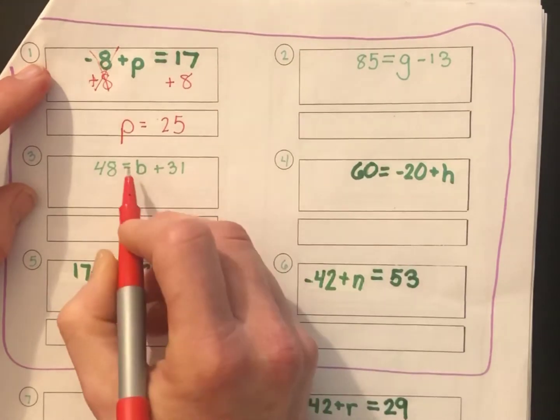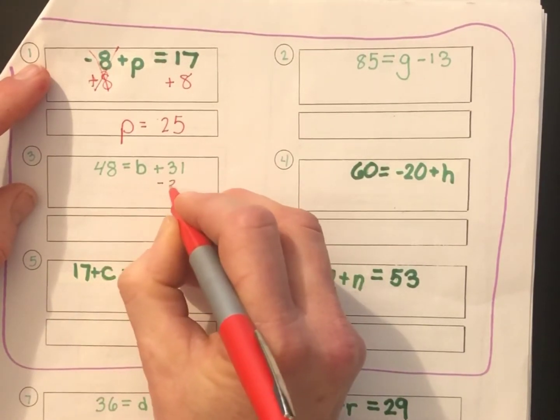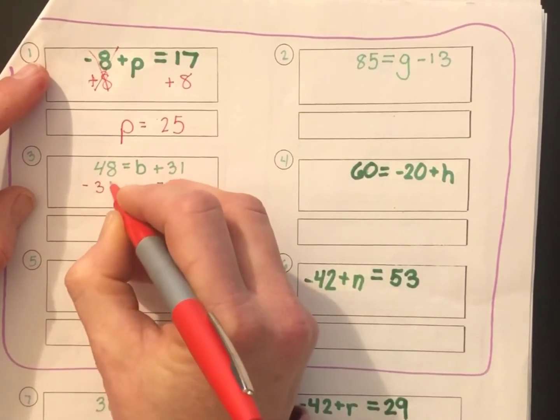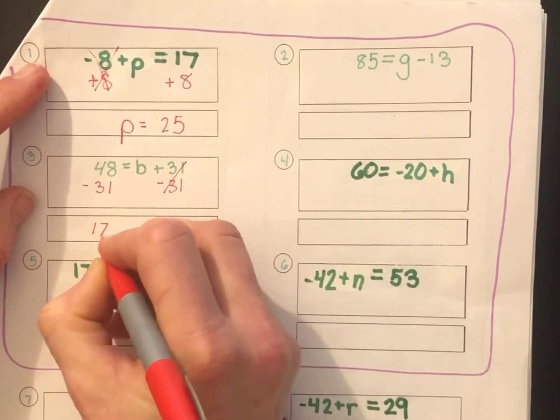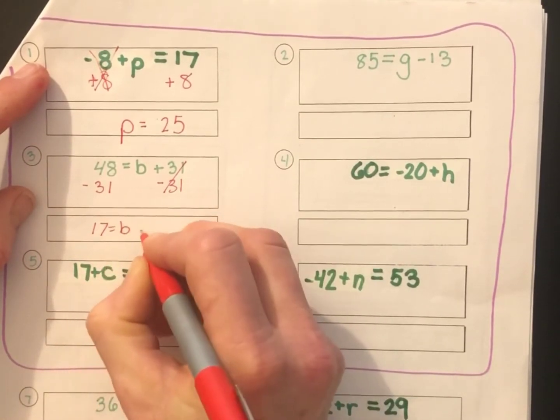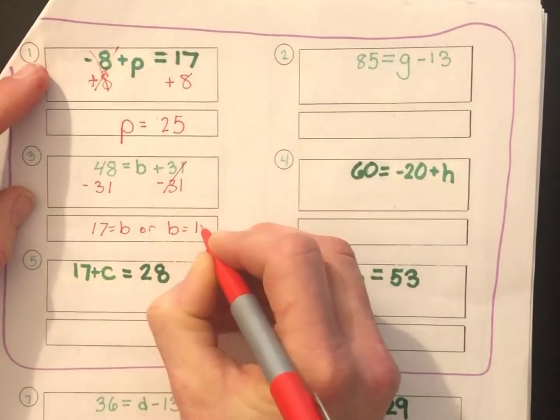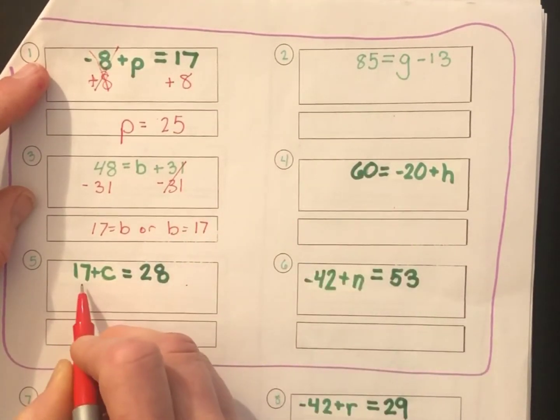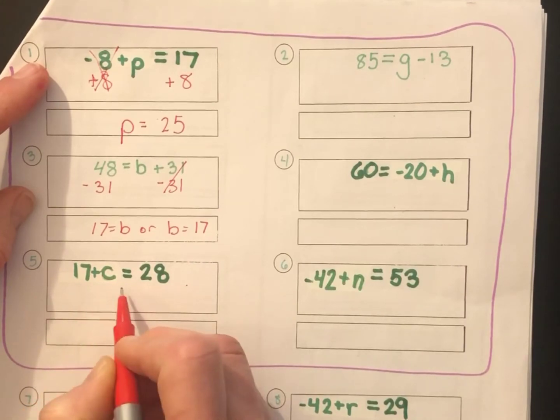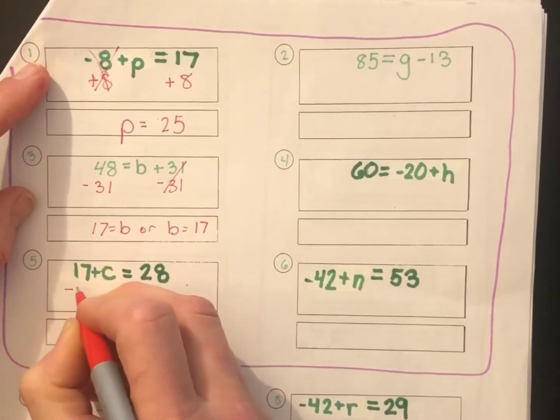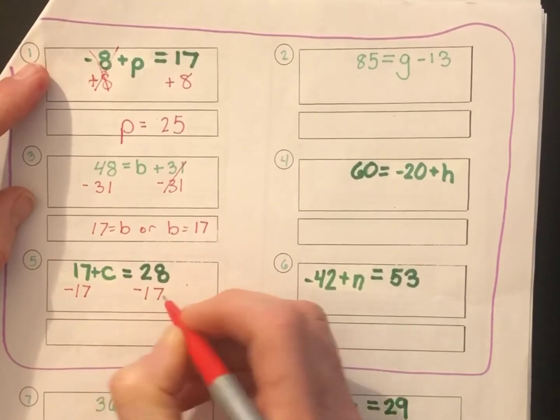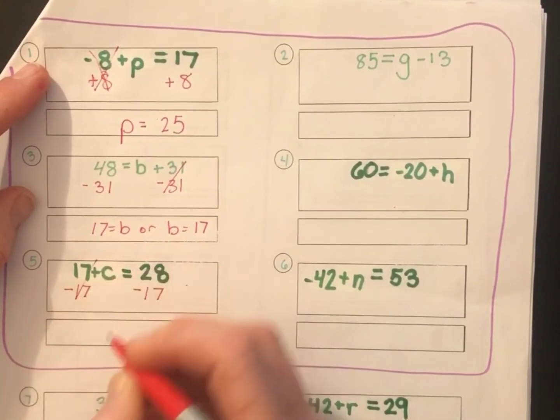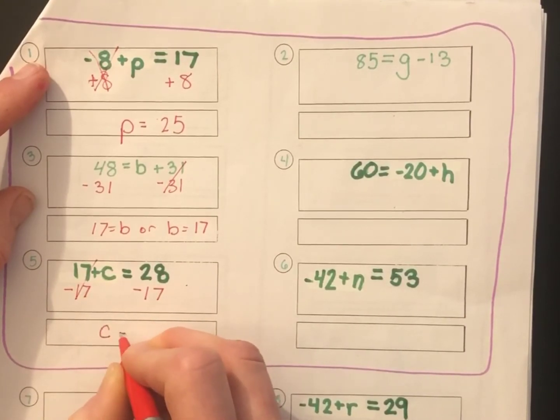This time, the variable is on the right side, but that's okay. To get it by itself, we're going to subtract 31 from both sides. 31 cancels out. We're left with 48 minus 31 is 17 equals b. We can also write b equals 17. Let's go to the next one, which I guess is number 5. 17 plus c equals 28. We want to get rid of the 17, so the opposite of positive 17 is negative 17. And we're left with c equals 11.